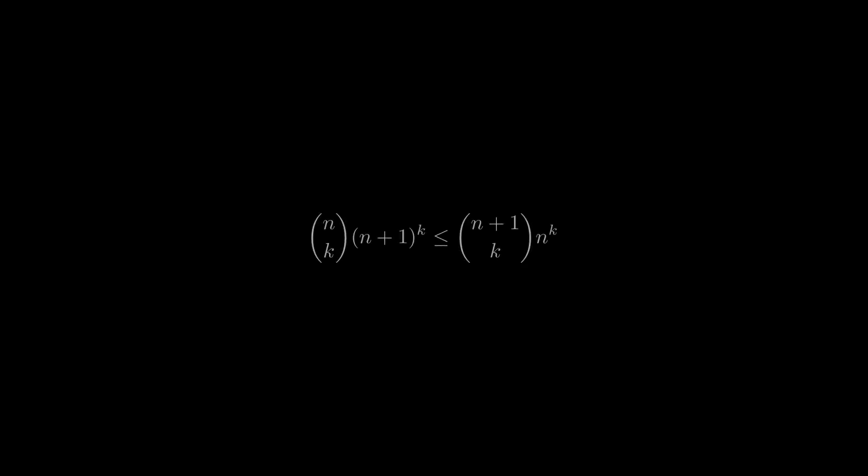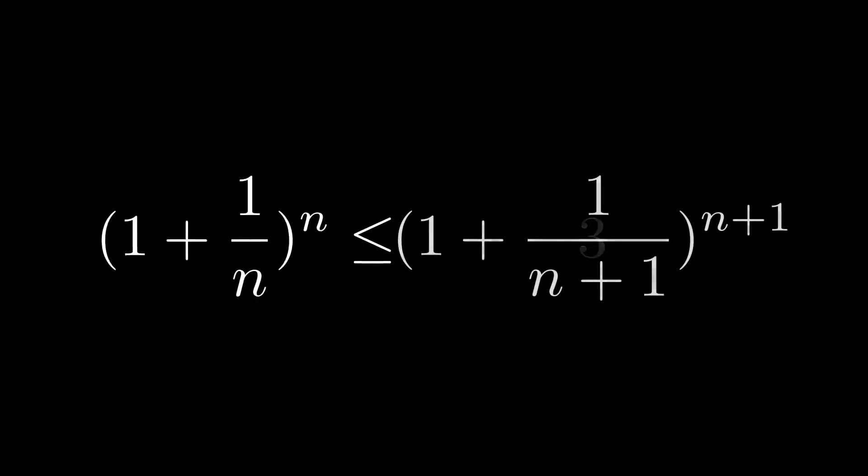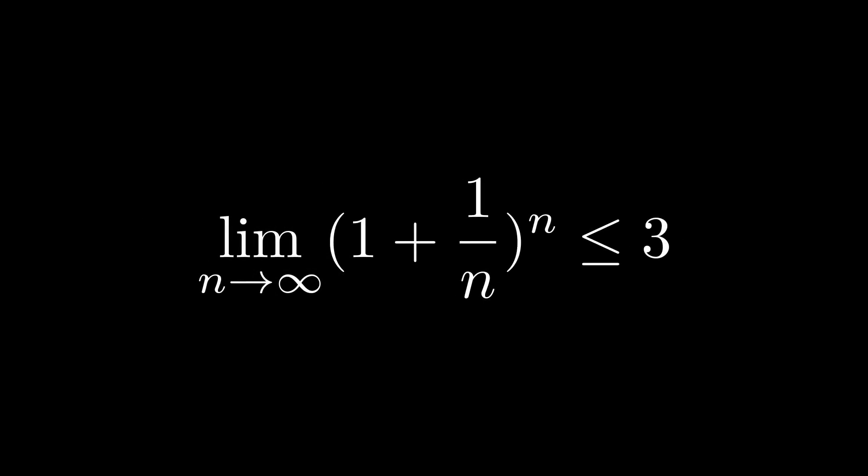This injection proves our inequality, and when we unwind all that algebra, it also shows that our sequence is monotonically increasing. We've shown that these terms are bounded above by 3 and increase monotonically, which means that the limit converges to some value e less than or equal to 3.